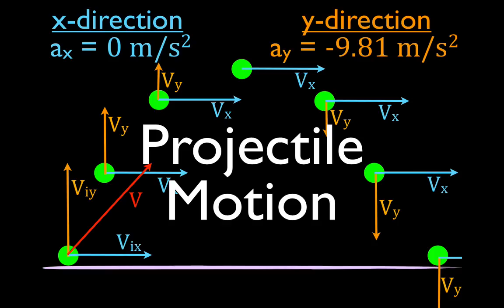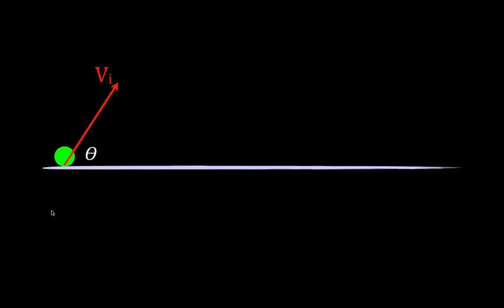In today's video we're going to go over a problem involving two-dimensional projectile motion. We're going to work a problem where we know the initial velocity of the object and the angle at which it is projected above the horizon. We have this object which is going to be projected with some initial velocity above the horizon. The angle is measured between the velocity vector and the horizontal. The object follows this simple parabolic path.